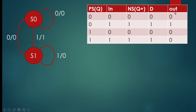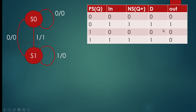Now let us also draw the column for output. When present state is 0 and input is 0, output is 0. When present state is 0 and input is 1, output is 1. When present state is 1 and input is 0, output is 0. When present state is 1 and input is 1, output is 0. This completes the output column.